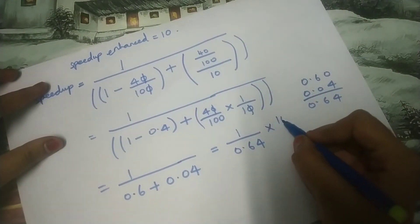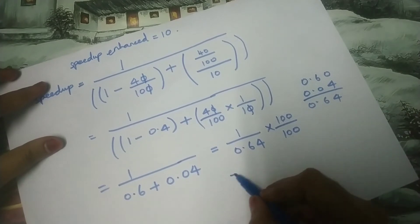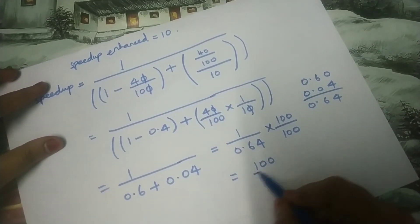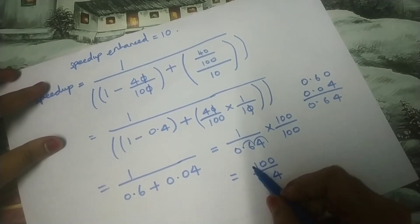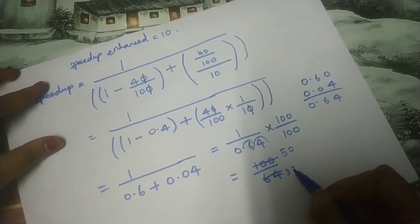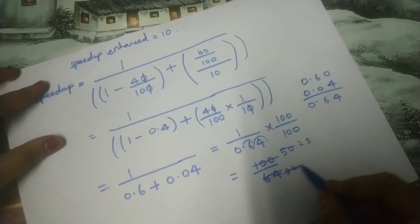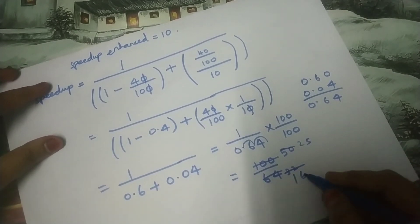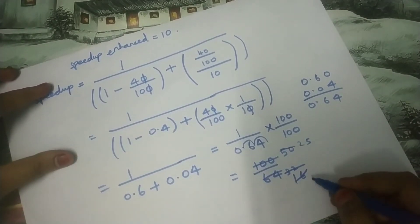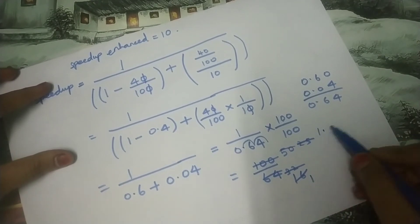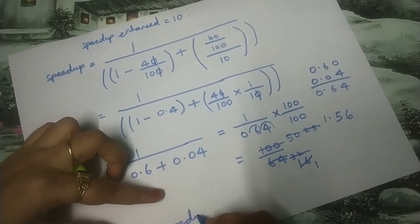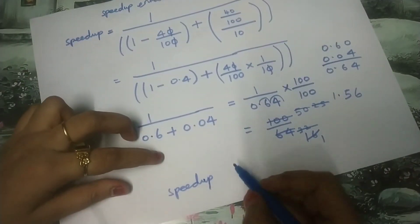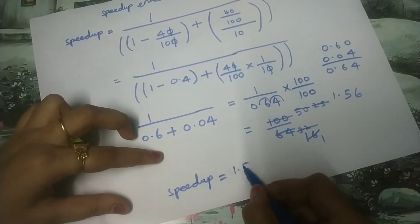Multiplying numerator and denominator by 100 gives 100 divided by 64, which equals 1.5625. So the overall speed-up is approximately 1.5625.